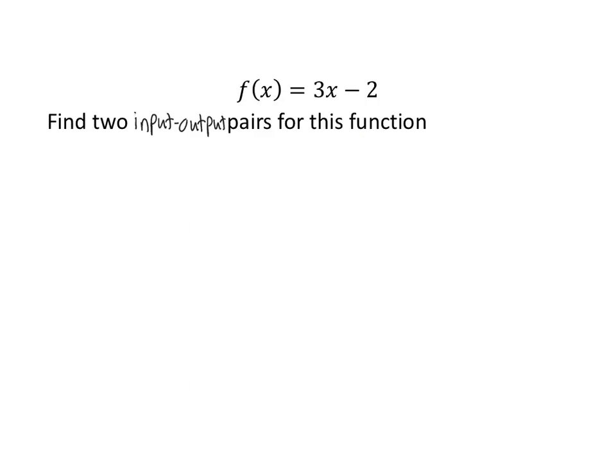Let's revisit one example from the last slide, f of x equals 3x minus 2. Suppose we would like to find two input-output pairs for this function. We need a value to use as the input for the function. Since we weren't given any specific direction, we can pick any number we like. So let's pick 4.